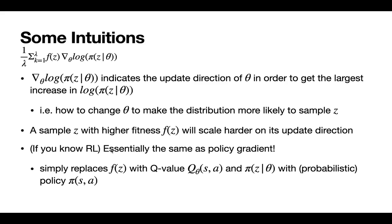Also just as a quick side note, if you have experience with reinforcement learning, then you may have noticed that this update is quite similar to the update in the policy gradient. If you were to just replace the fitness with a Q-value, and the PDF with the policy, then you'd get essentially just the same update equation. I've actually found it quite fascinating that the evolution and RL communities share many common developments, and we're going to mention one of those shared developments when we talk about the natural evolution strategy in the next video.